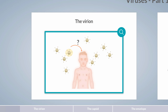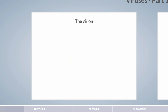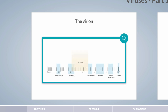Let's start with the virus particle, also known as the virion, which is the extracellular form of a virus used to spread from one cell or organism to another. In contrast to bacteria or fungi, viruses are complex molecular structures. However, they don't count as living organisms as they don't have their own metabolism.